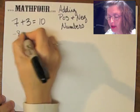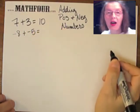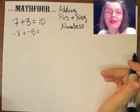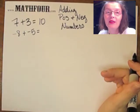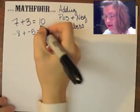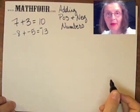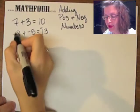Same goes with negative 8 plus negative 5. It's still the same sign. All you have to do is add them together and put a negative on it because they're both the same sign.